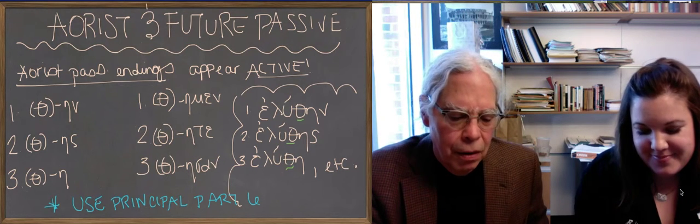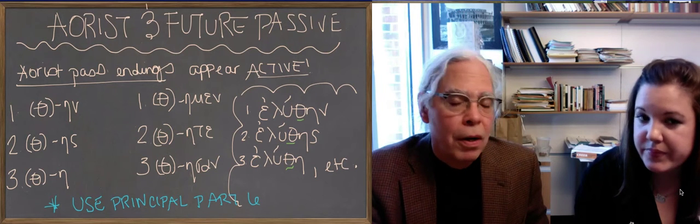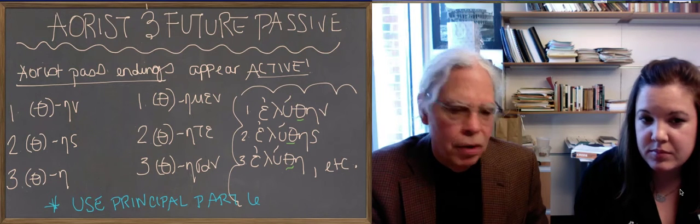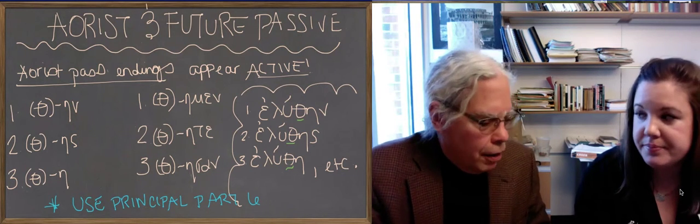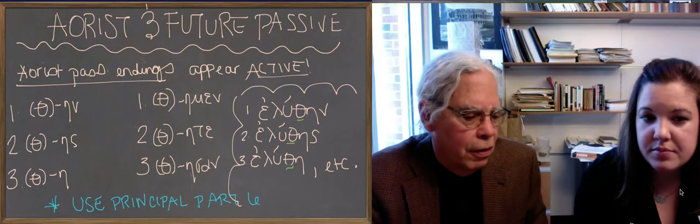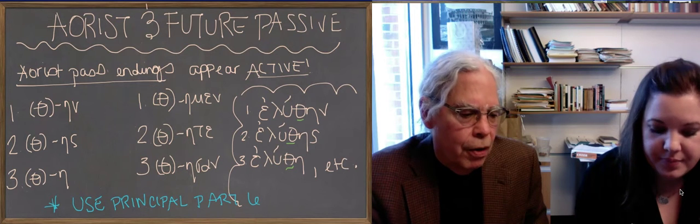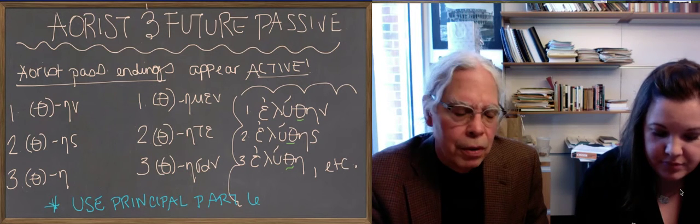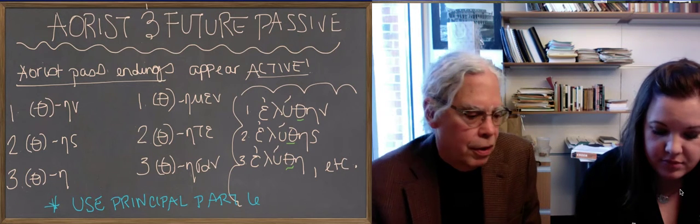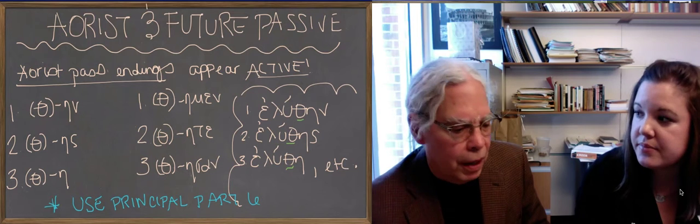Today we're going to talk first about the aorist and the future passive, which are the only forms of the passive voice that are not the same as the middle. So they're distinctive in their forms and formations from the rest of the passive forms. The present forms we looked at are much more consistent with the system, and these are innovative forms. They're a development out of something else.